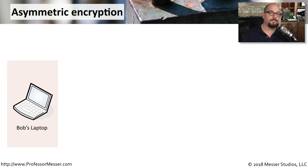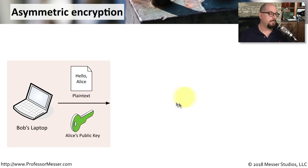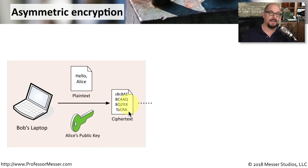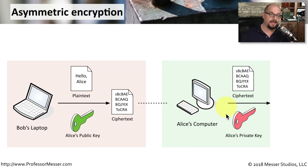Let's say Bob would like to encrypt some information and send that to Alice using this asymmetric encryption process. Before we start, Bob needs access to Alice's public key — it might be on her web page, part of a public key repository, or Alice might provide it directly to Bob. Bob starts with the plain text he'd like to send, in this case "Hello, Alice," and uses Alice's public key to combine with that plain text to create the ciphertext. This is the encrypted data and it looks nothing like "Hello, Alice." Bob sends that ciphertext to Alice, and Alice uses her private key to decrypt the information and read the original plain text.